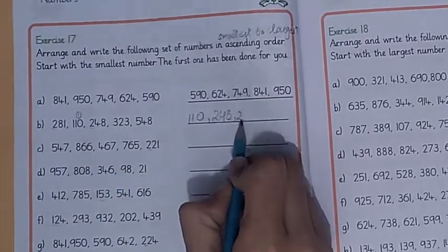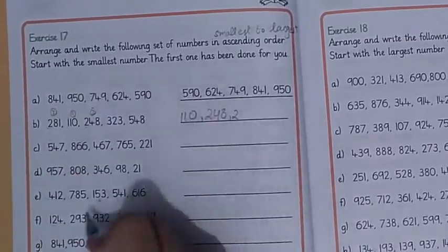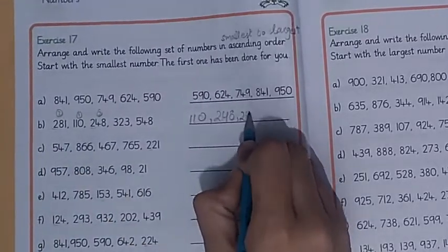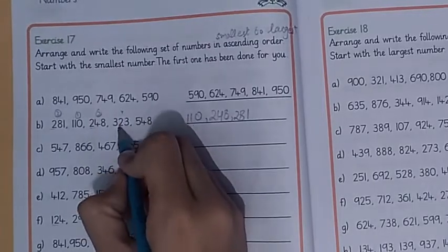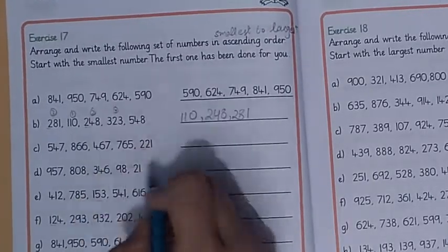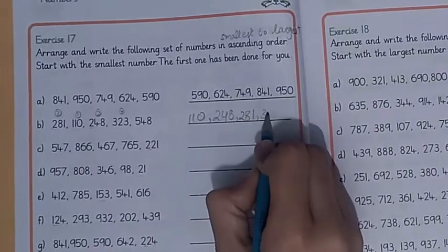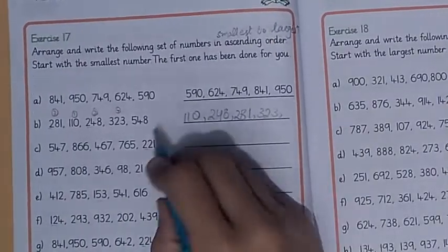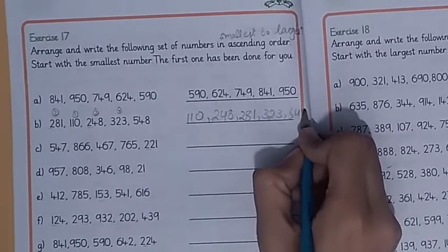Then we write the next number, 281. Now here we have 300 and 500, so the next number is 323, and the last one is 548.